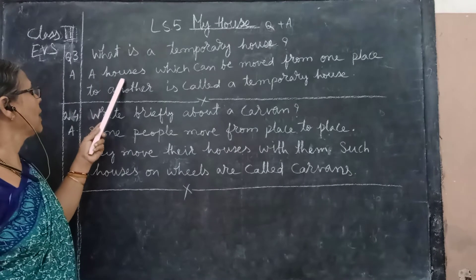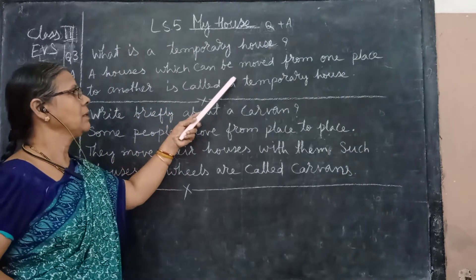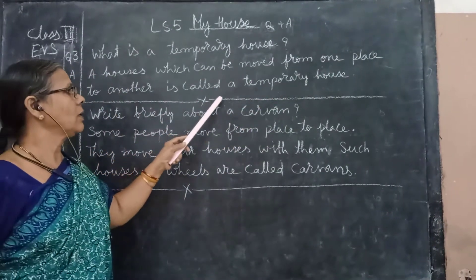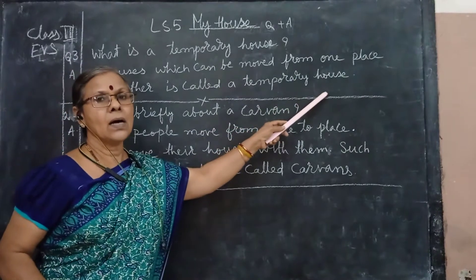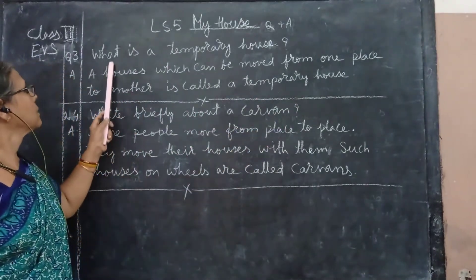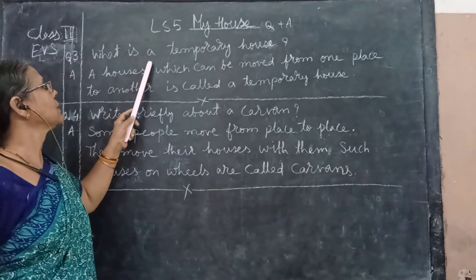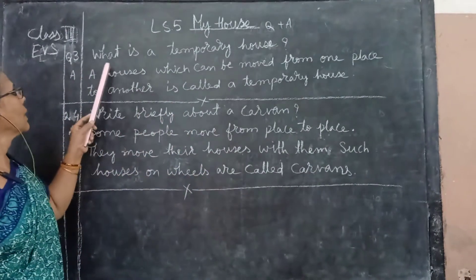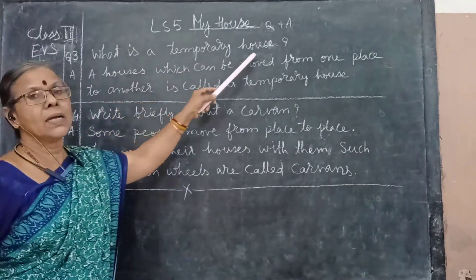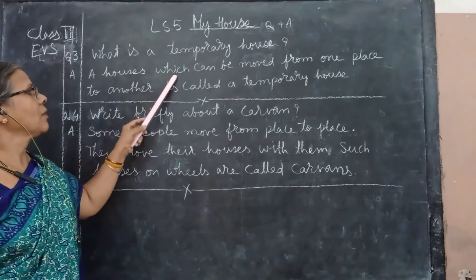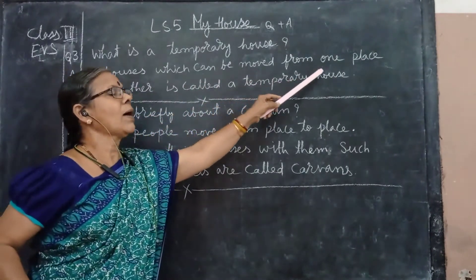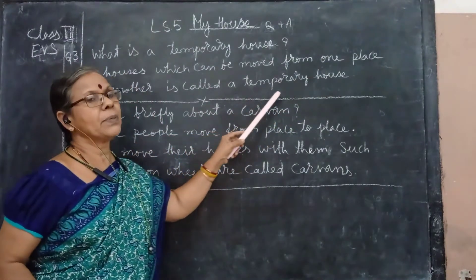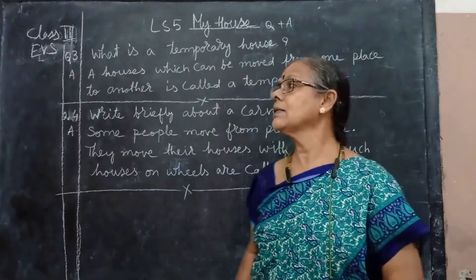What is a temporary house? A house which can be moved from one place to another is called a temporary house. Once again, repeat the question and answer in your mind whenever I am reading. What is a temporary house? A house which can be moved from one place to another is called a temporary house.